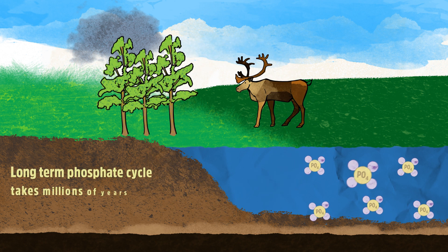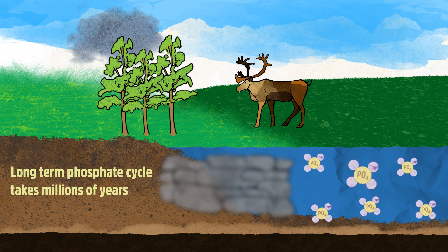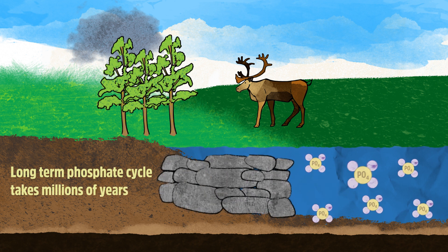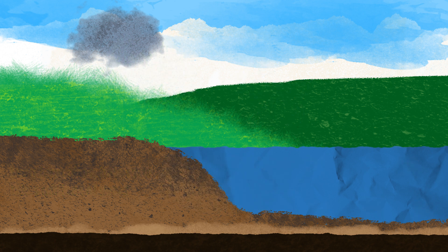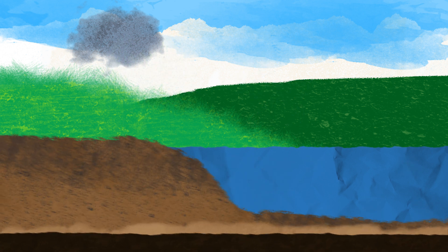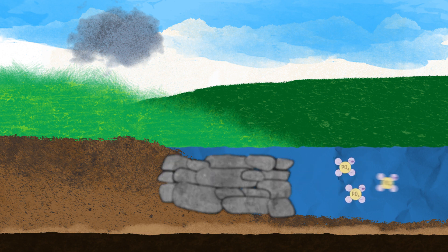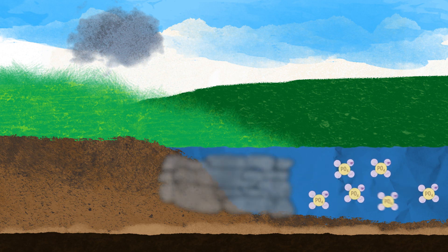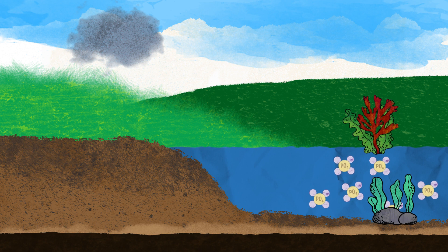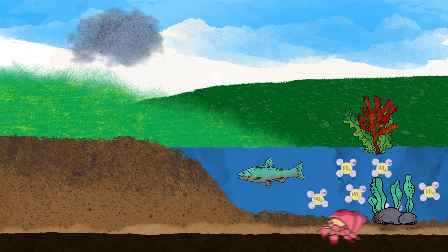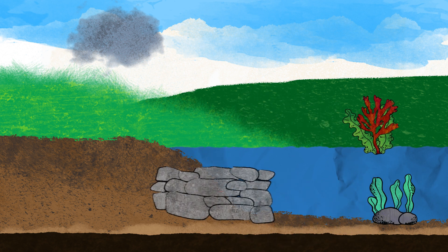The long-term part of the cycle involves phosphate in water bodies forming phosphate rock over millions of years. Geologic uplift brings the rocks to the surface. Phosphate erodes from rocks and enters oceans where it can be absorbed by algae and other plants. Marine animals use the phosphate for bones and shells. When they die, these become rock.